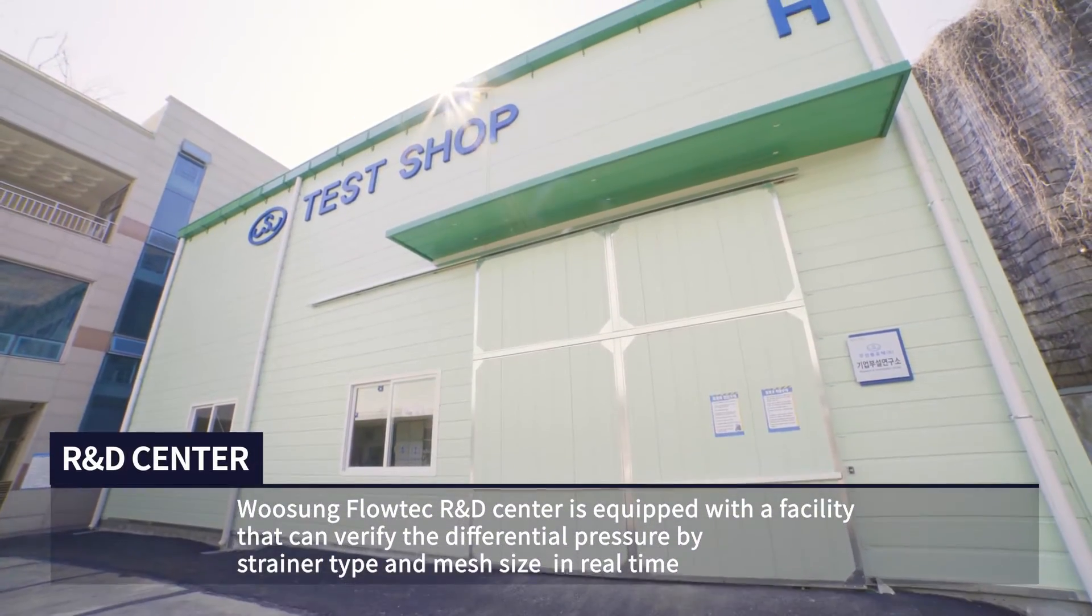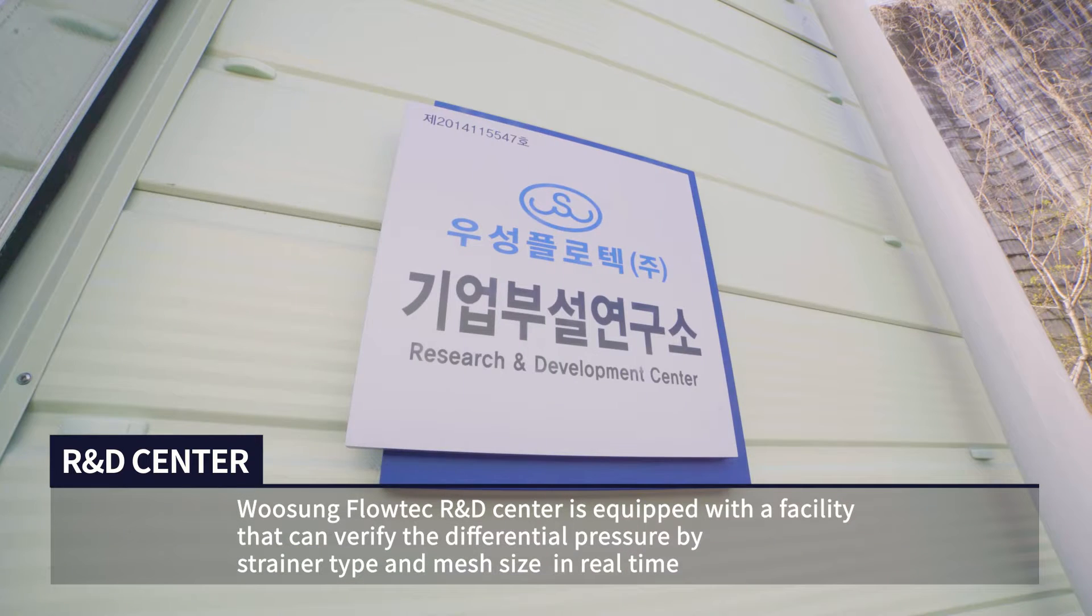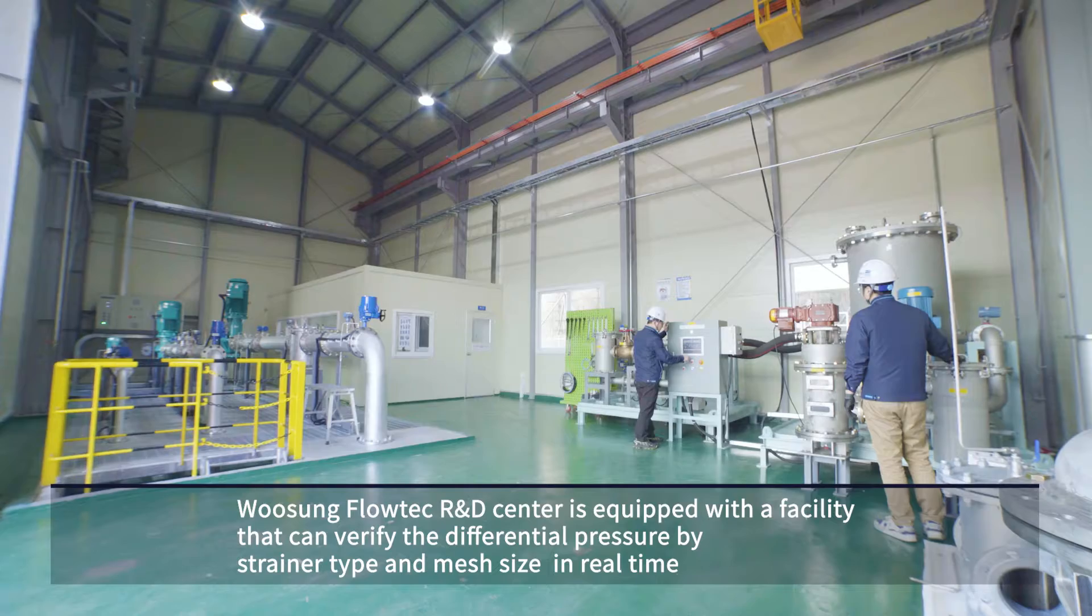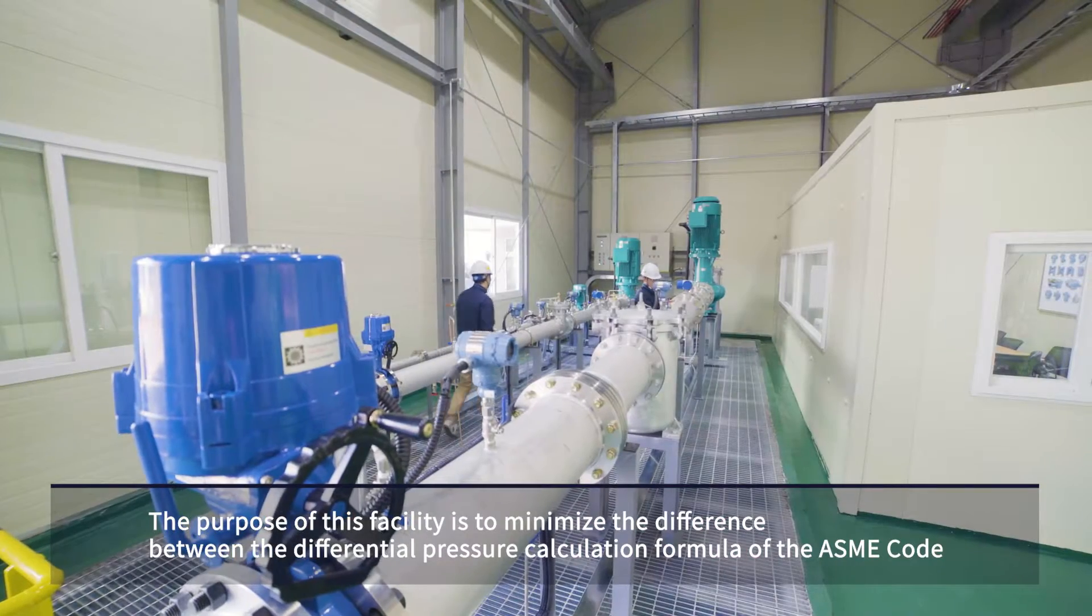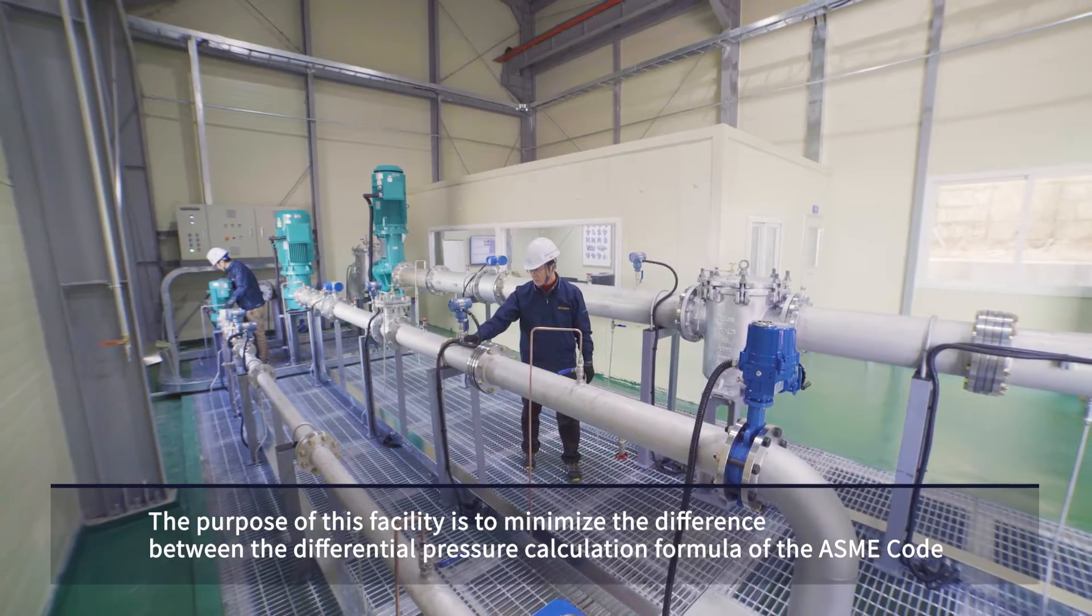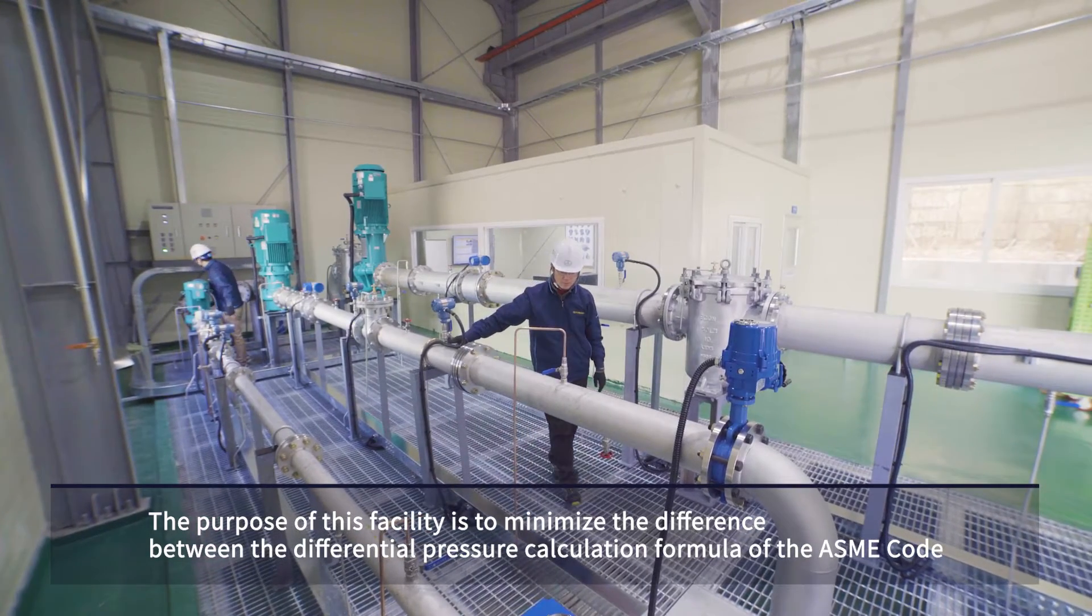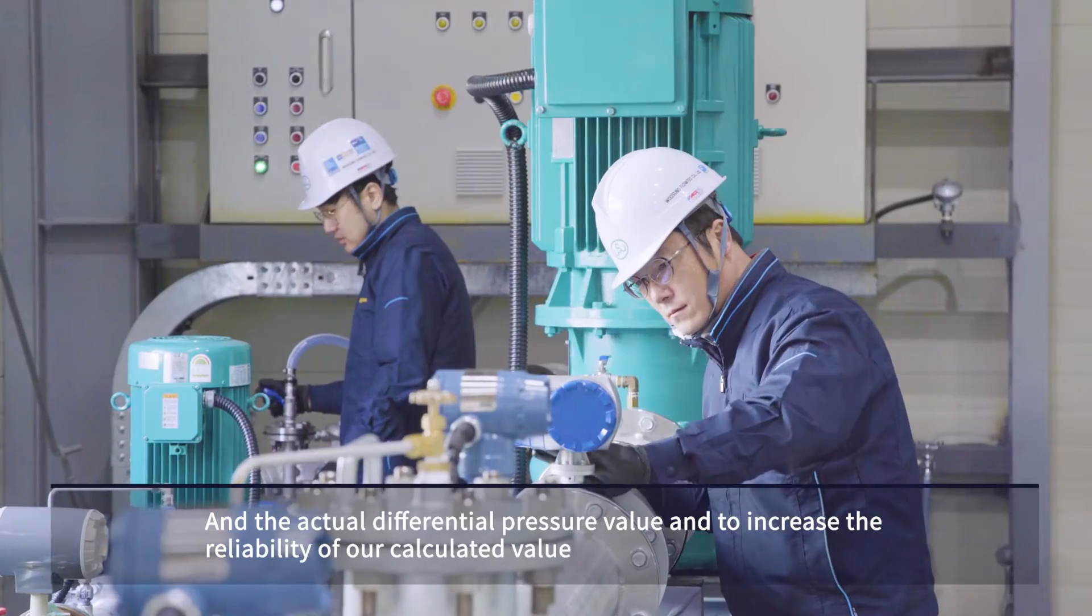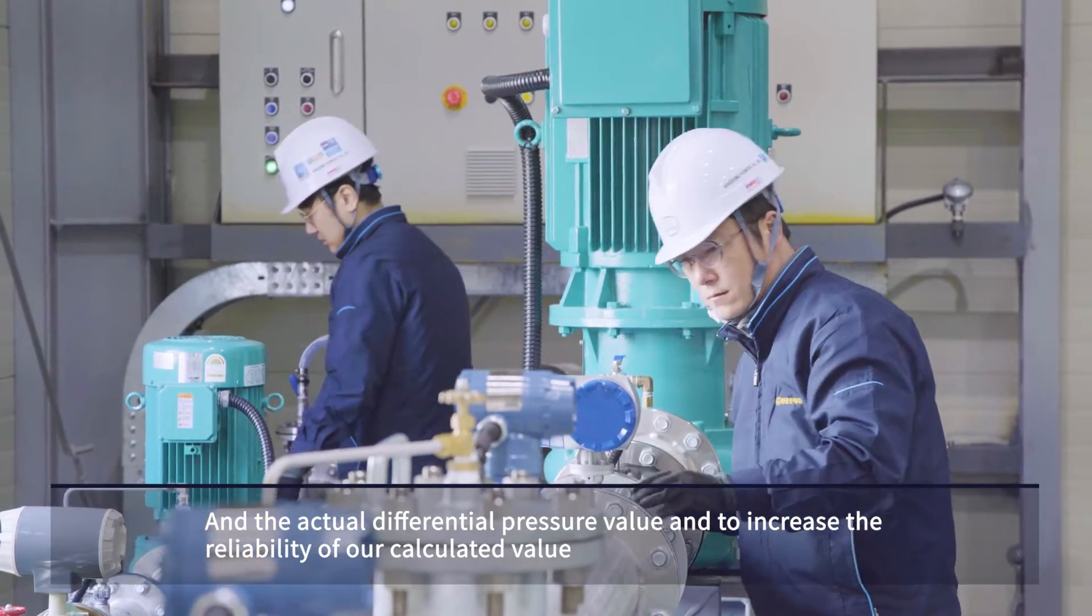Woosung Flowtec R&D Center is equipped with a facility that can verify the differential pressure by strainer type and mesh size in real time. The purpose of this facility is to minimize the difference between the differential pressure calculation formula of the SME code and the actual differential pressure value, and to increase the reliability of our calculated value.